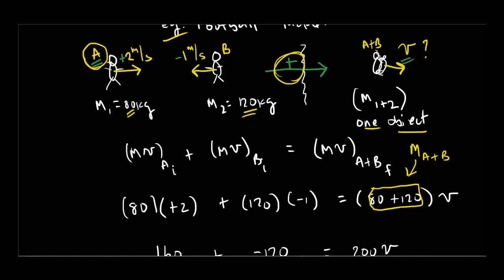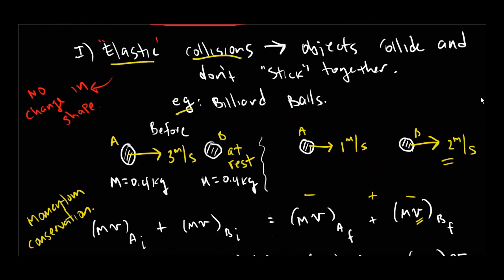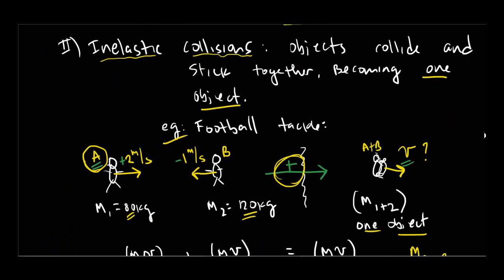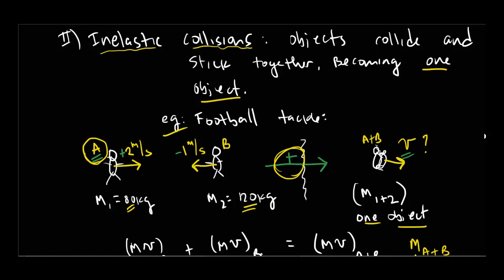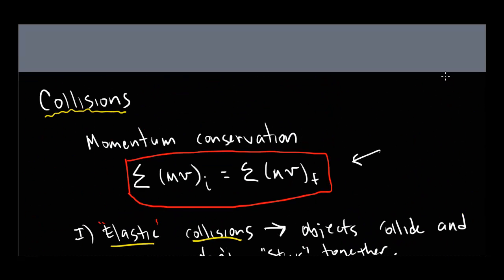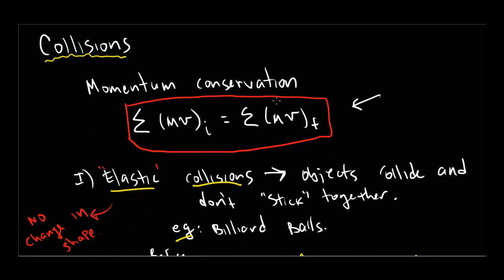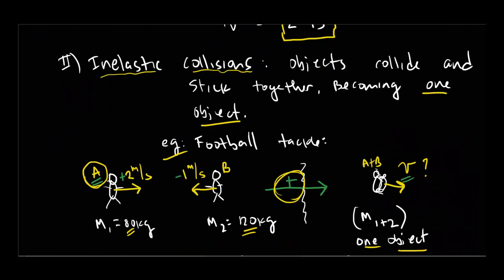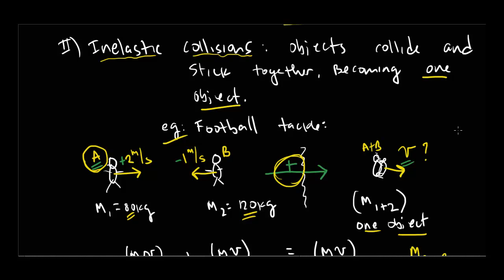So there we have it — two basic types of collisions: elastic and inelastic. In both cases we use momentum conservation. The difference is that in an elastic collision you have multiple objects before and after, whereas in an inelastic collision you have multiple objects initially but only one object at the end, because they collide and stick together. We'll do practice problems next class to help fully process the difference between elastic and inelastic collisions.